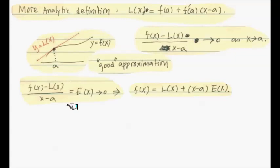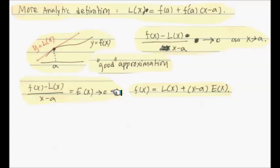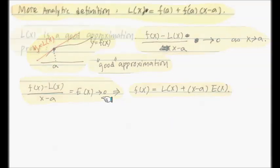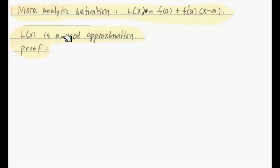The limit behavior simply means: if I set [f(x) - L(x)] / (x - a) equal to a function E(x) — of course not defined at x = a, but its limit behavior as x approaches a — we can piecewise define E(x). Then if you solve for f(x), you can write: f(x) = L(x) + (x - a)·E(x), where E(x) approaches zero. Now let's take a look at the proof that L(x) is a good approximation.